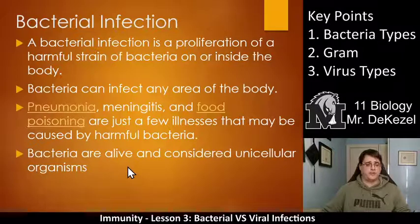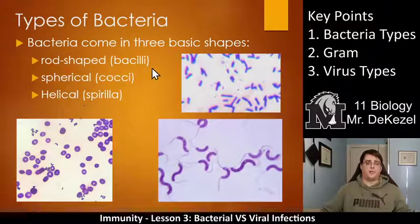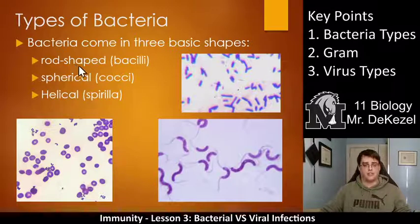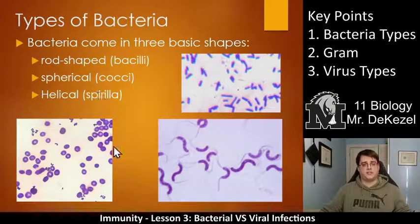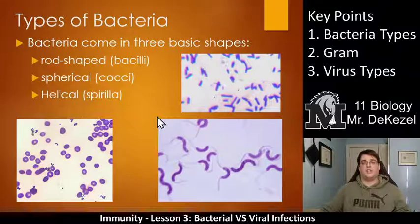It's key that bacteria are alive and they are considered unicellular organisms. You are multicellular; bacteria are one cell, but they are considered to be alive. Bacteria come in three basic shapes, and here are some pictures of real bacteria. There are rod-shaped bacteria called bacilli, spherical bacteria called cocci, and helical bacteria called spirilla.